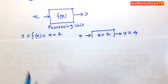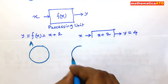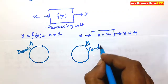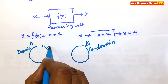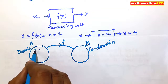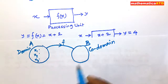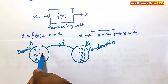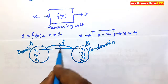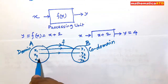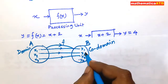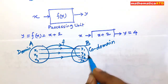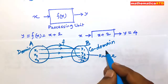Suppose we have two non-empty sets A and B. A is the domain and B is the co-domain, and there is a correspondence F from A to B. There are elements x1, x2, and x3 in A. If x1 has the image y1, x2 has the image y2, and x3 has the image y3, then the set formed by these images is known as the range. So the range is a subset of the co-domain.